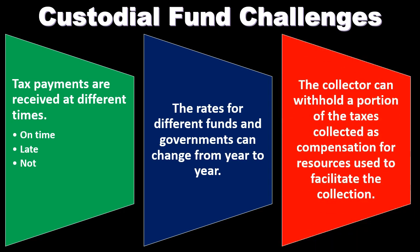Another challenge is that the collector can withhold a portion of the taxes collected as compensation for resources used to facilitate the collection. Since the government is acting as a fiduciary — essentially an agent collecting assets that don't belong to that governmental unit — it can retain a portion to cover the costs of performing that collection and administrative role on behalf of another entity.